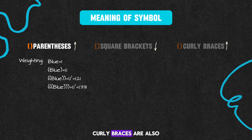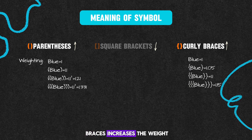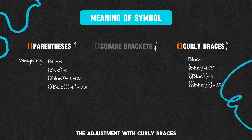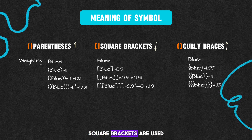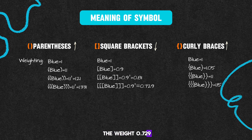Curly braces are also used to increase the weight of a hint. Each layer of curly braces increases the weight by 0.05, so the adjustment with curly braces is much smaller than that with parentheses. Square brackets are used to decrease weight — one square bracket makes the weight of a hint word 0.9 times less, and three square brackets make the weight 0.729.